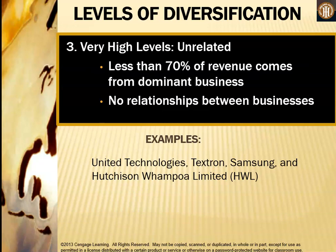At very high levels of diversification, we have unrelated diversification. Less than 70% of revenue comes from the dominant business and there are no relationships between businesses. Examples include United Technologies, Textron, Samsung, and Hutchinson Limited. These companies are owned by the same group but do not share any distribution channel, technology, or products — the businesses within them are completely unrelated.